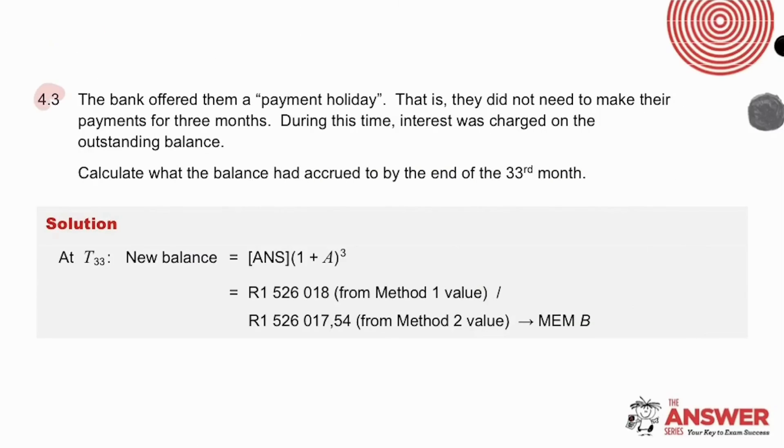Okay so 4.3 tells us that because of the challenges as a result of the health crisis a payment holiday was offered and it is asking us to calculate the accrued balance by the end of the 33rd month. We take the answer we got in 4.2 for what is owing on the loan. This will be the last answer on your calculator and we compound it forward for three months. Here we have shown answers for 4.3 using the answers from both methods. Whichever answer you got is fine and needs to be saved in memory B so that it is available to be used in the next part question.